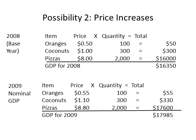The second scenario is that the quantity of goods produced has remained the same from 2008 to 2009, but the prices have changed upward. In 2008, oranges sell for $0.50 and 100 are sold, adding $50 to GDP. Coconuts sell for $1 and 300 coconuts are sold, adding $300 to GDP. Pizzas sell for $8 each and 2,000 pizzas are sold, adding $16,000 to GDP, giving a total GDP of $16,350.